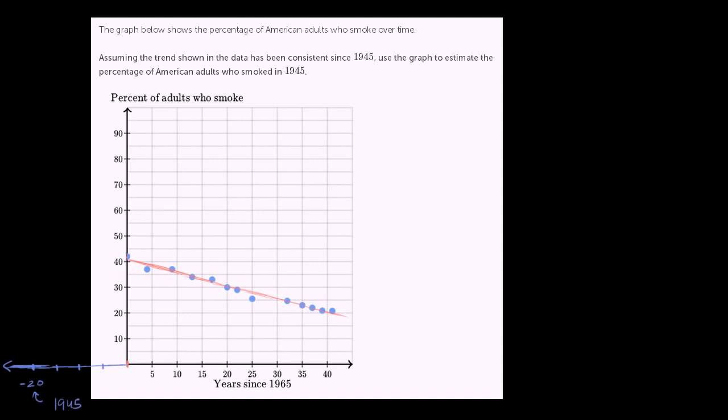And one thing that we could do is very roughly just try to extend this negative linear relationship backwards. And they allow us to do that by saying, assuming the trend shown in the data has been consistent. So the trend has been consistent. This line represents the trend. So let's just keep going backwards. Keep going backwards at the same rate. So something like that. I want to make sure that it looks at the same rate right over here.